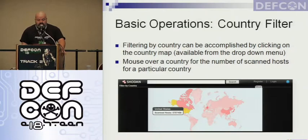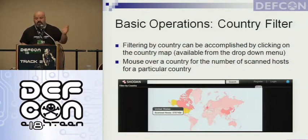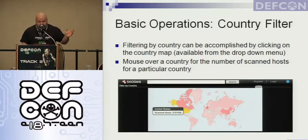On the country filter map, if you mouse over a country it turns yellow and tells you how many hosts have been scanned in that country. For example, here in the United States, it's some ridiculously large number.